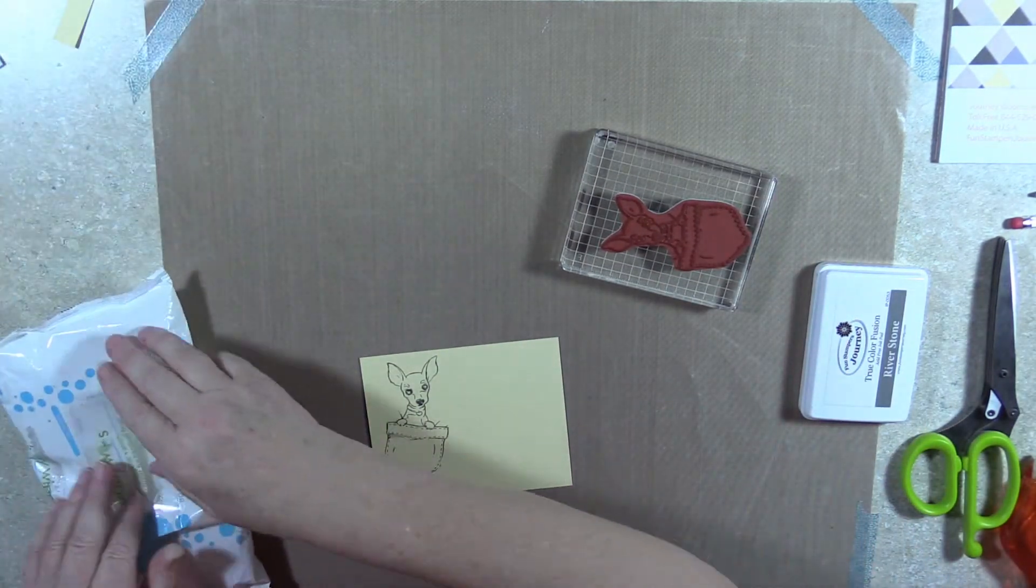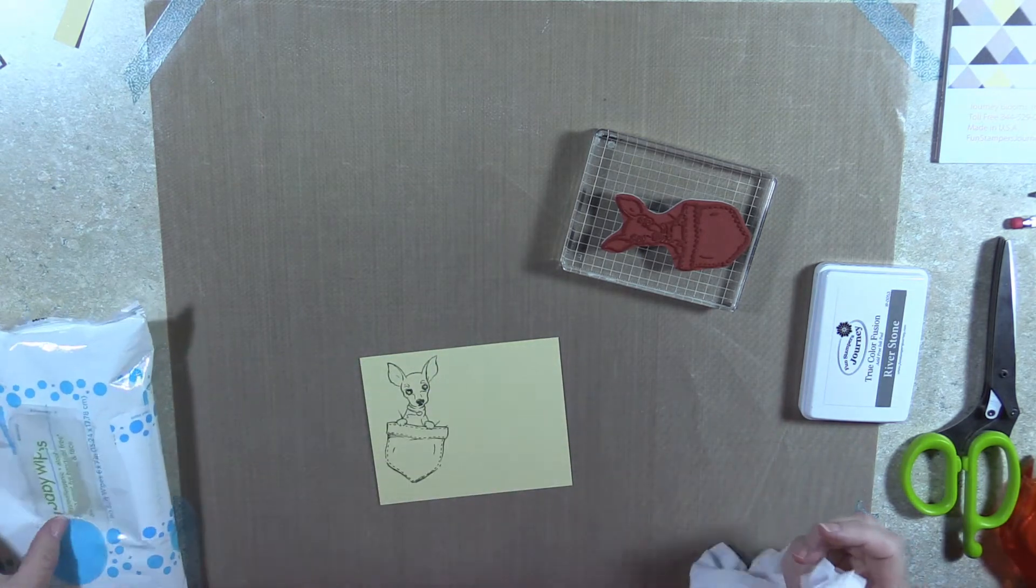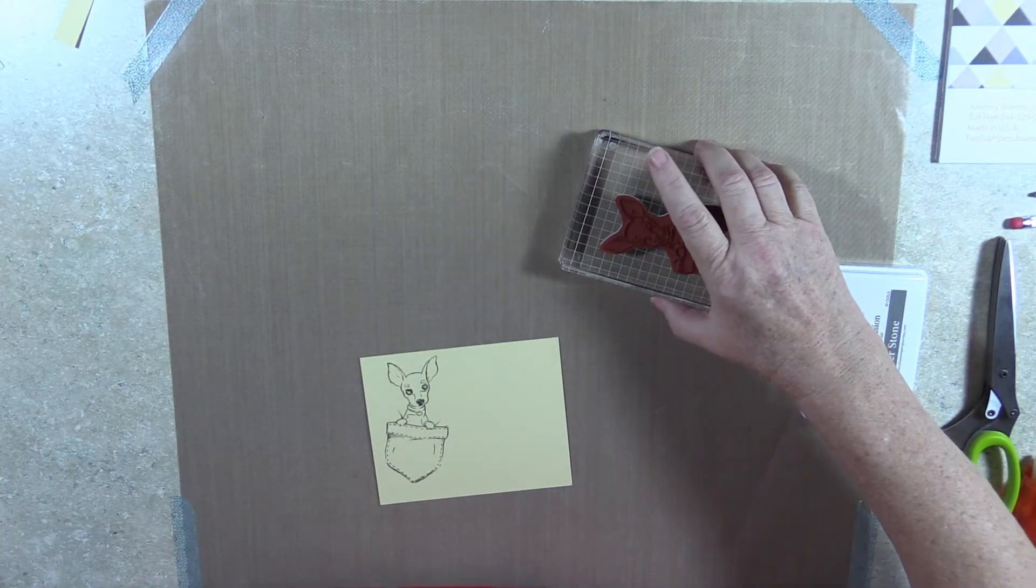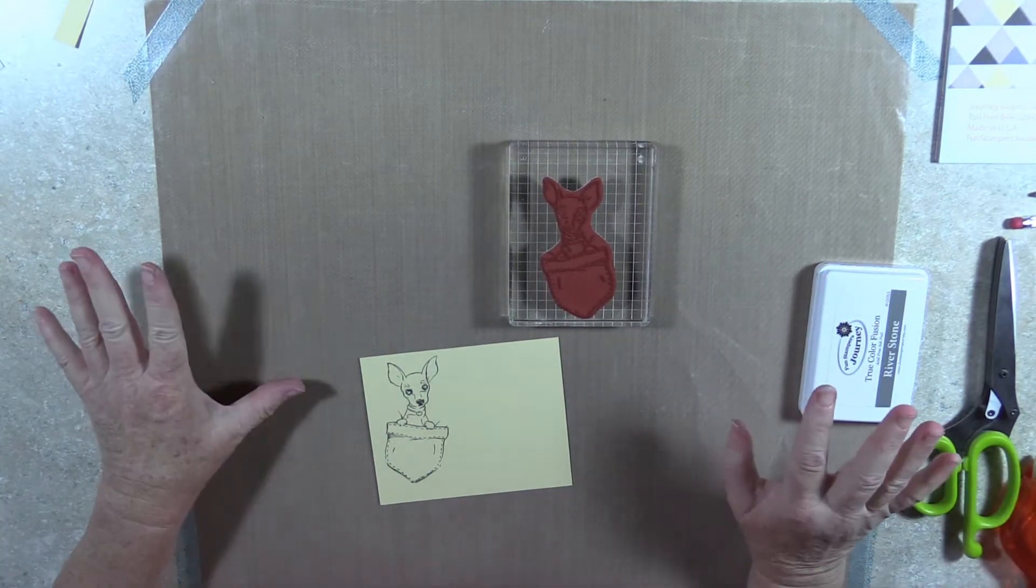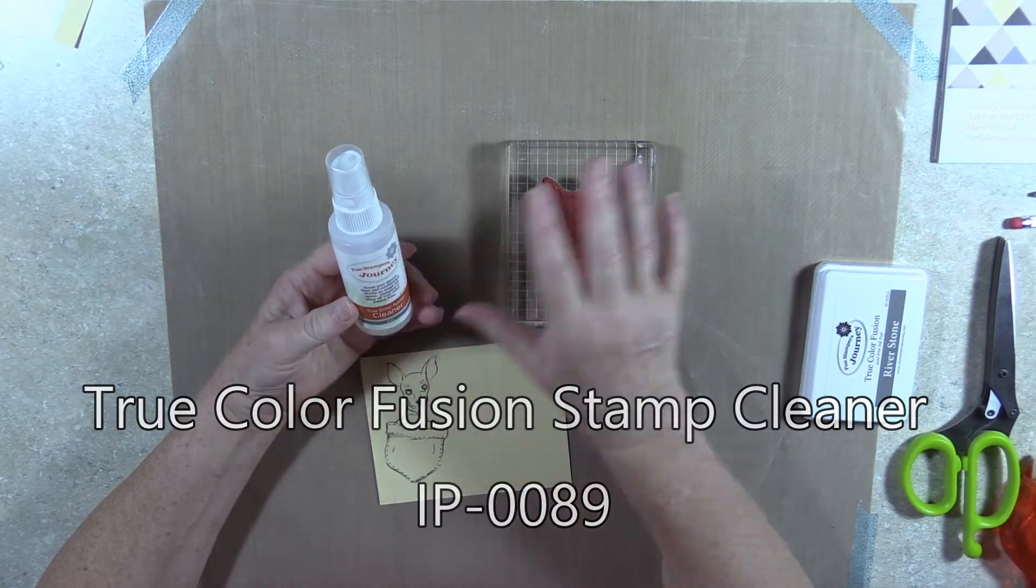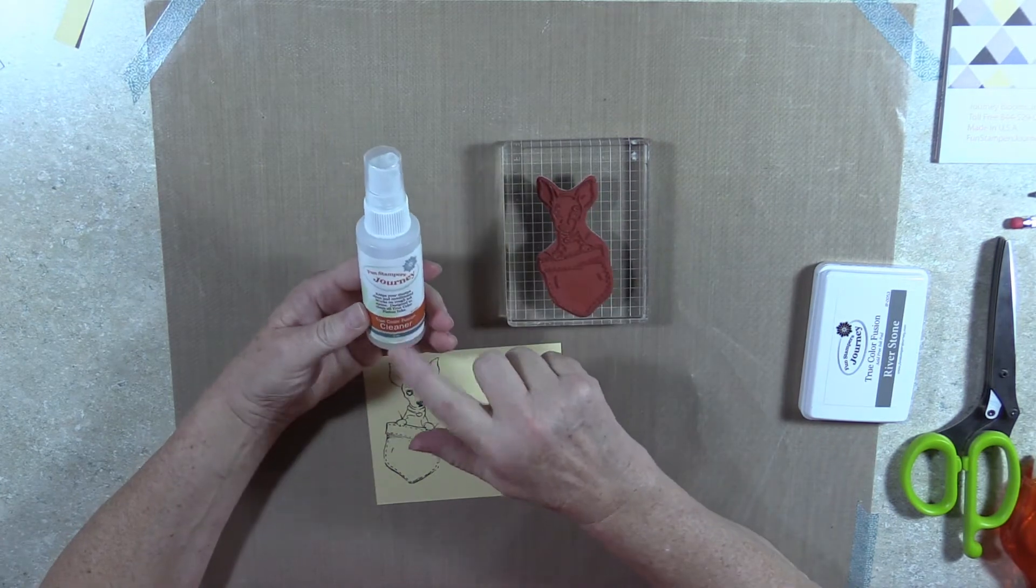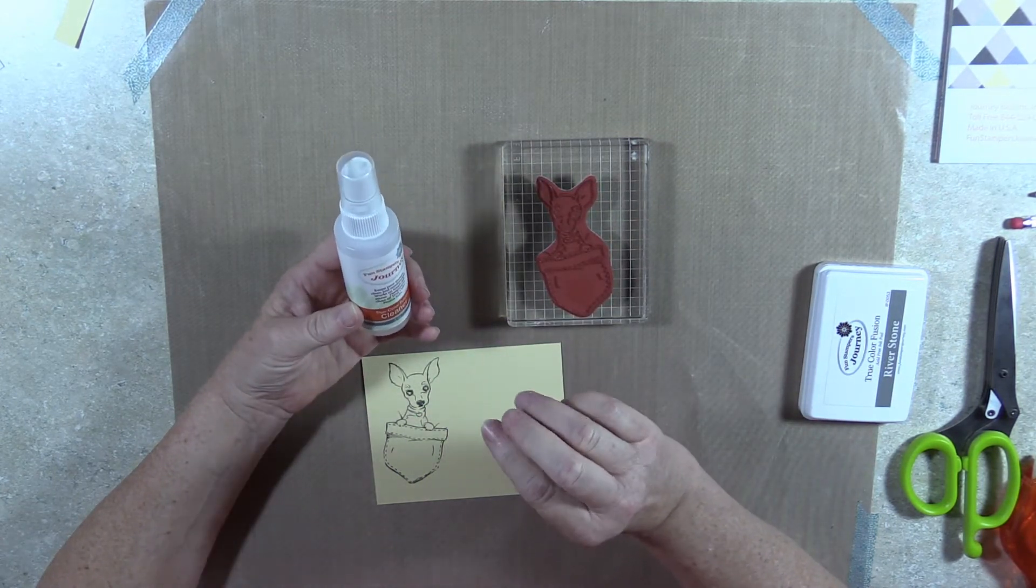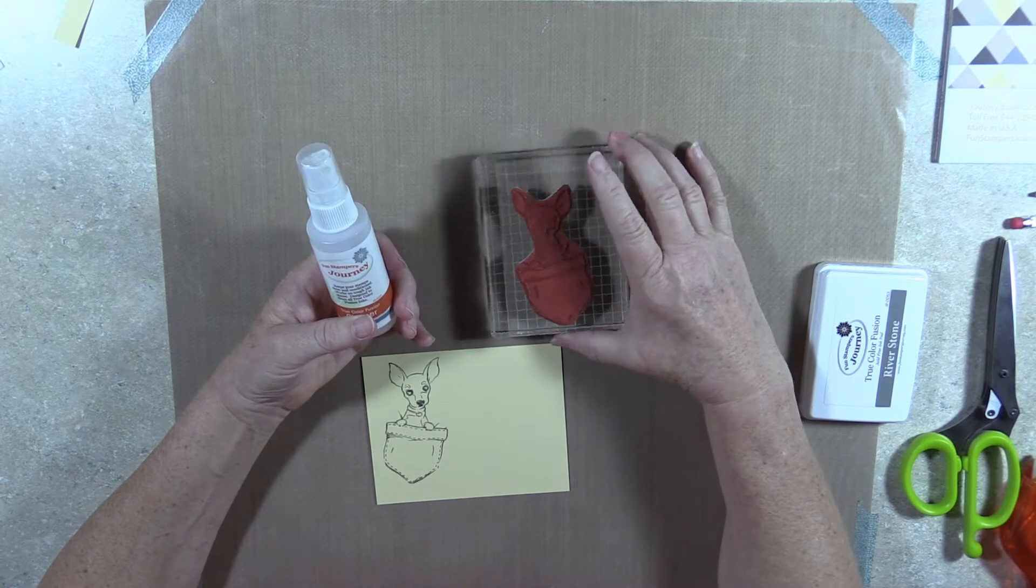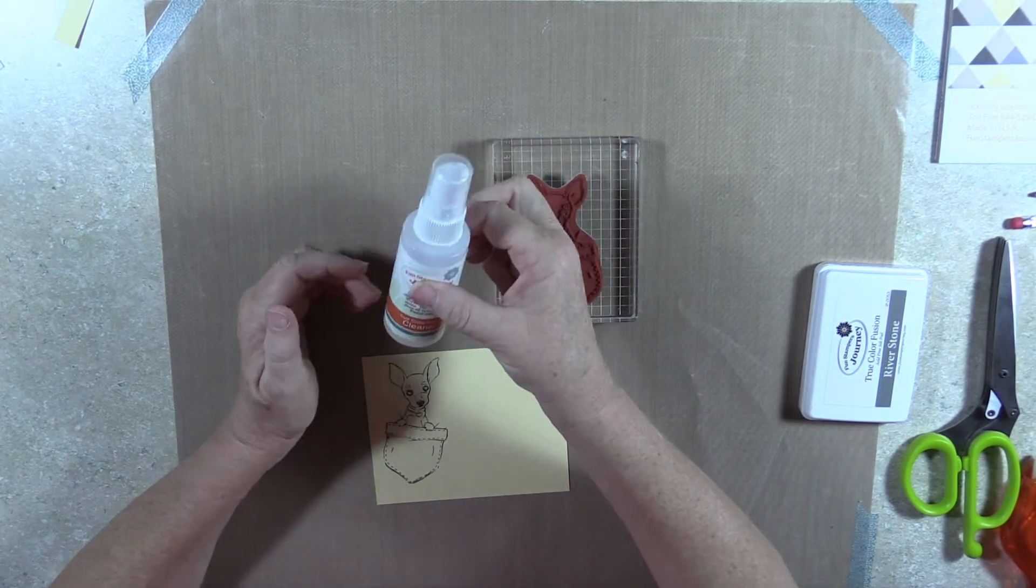I'm going to clean off my stamp. When I use baby wipes, I use unscented alcohol free baby wipes. That's just to get most of it off while I'm working. But when I'm through with my project, I take the True Color Fusion cleaner, put it on a rag and go over. It not only takes off all the remnants of ink, it also conditions your stamp. It does have an odor, and I have a couple friends who have chemical sensitivities, so they don't use this, they only use the baby wipes. But as far as conditioning and getting everything off, this is just a perfect item.